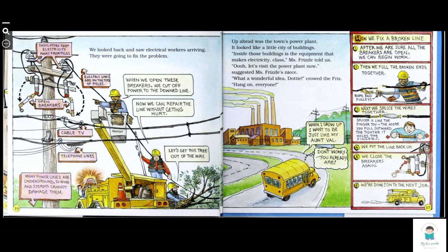We looked back and saw electrical workers arriving. They were going to fix the problem. When we open these breakers, we cut our power to the downed line. Now we can repair the line without getting hurt. Let's get this tree out of the way. Electric lines are on the tops of the poles. Open breakers, cable TV, telephone lines. Many power lines are underground so wind and storm cannot damage them.